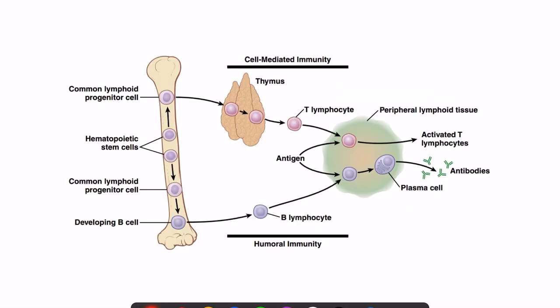First, let us see how these cells are formed and how they go to various places in the body to look for the antigen. We have hematopoietic stem cells present in the bone marrow. These hematopoietic stem cells can give rise to many cells — red blood cells, platelets, and all types of WBCs — but here we are focusing on the development of T cells.